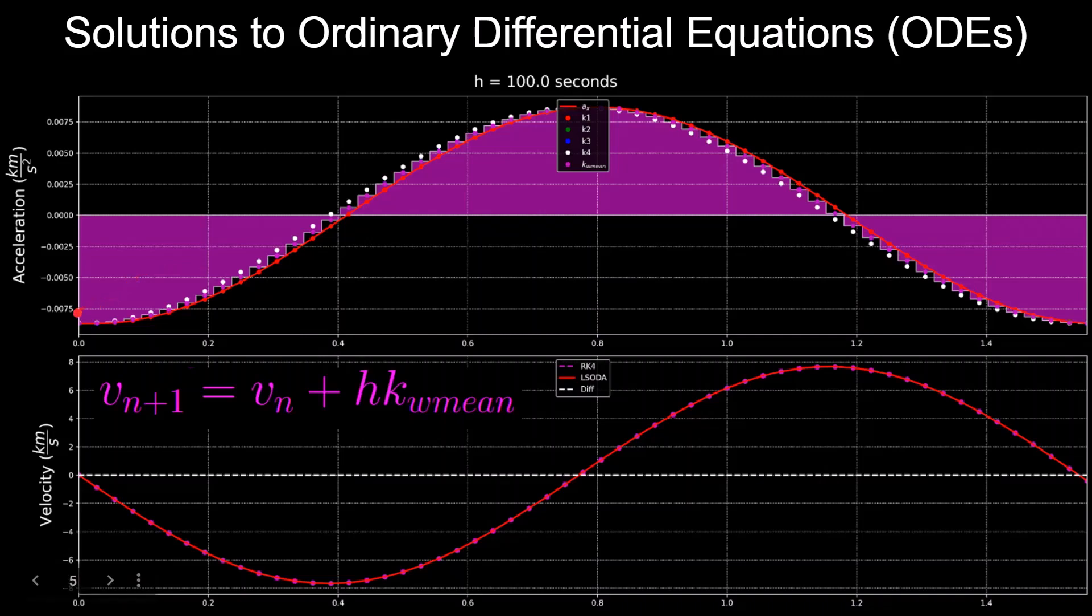we evaluate the derivative function, acceleration, here, and assume it is constant throughout that time step in order to estimate the velocity at that time step. And this is done by multiplying the derivative value and the time step together, where this is also equivalent to the area of a rectangle that has a height of the derivative evaluation and a width of the time step. So here, the next estimate of the velocity is equal to the previous estimate plus the area under the curve of the acceleration function, which is also equal to the cumulative area under the curve of acceleration.